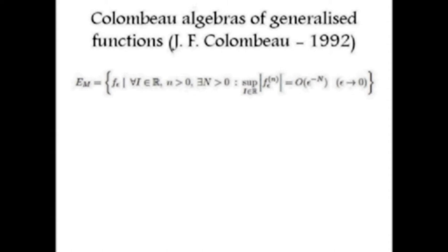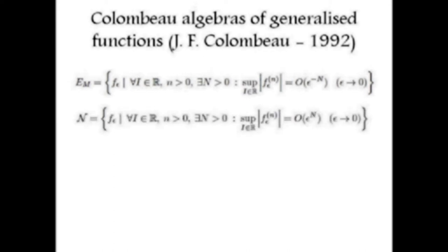We define the subalgebra M of all moderate functions. Similarly, there are functions in E which decay very fast as epsilon goes to zero — faster than one over any polynomial. When multiplied by another function, these functions flatten it and act like zero. It is therefore natural to define the set N of these functions, which are called null functions.